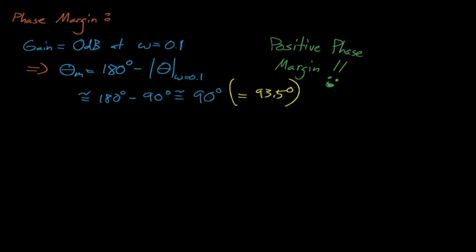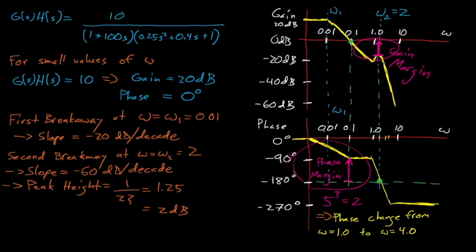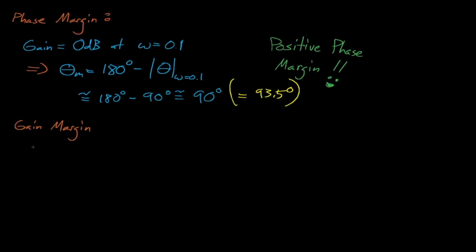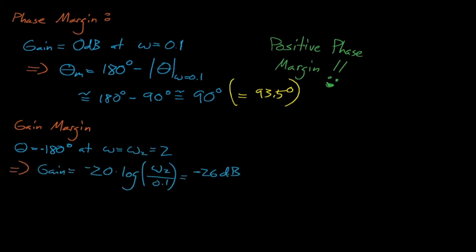Our phase plot crosses a phase of negative 180 degrees when omega equals omega 2, and if we trace this frequency up to the gain plot, we see that our gain peak takes place right at this frequency. Thus, our gain margin is equal to 0 decibels minus the gain at the height of this little peak. We can find the gain at this frequency by extrapolating the earlier negative 20 decibels per decade line to this point where omega equals 2, and then by adding the height of this peak, which equals 2 decibels.